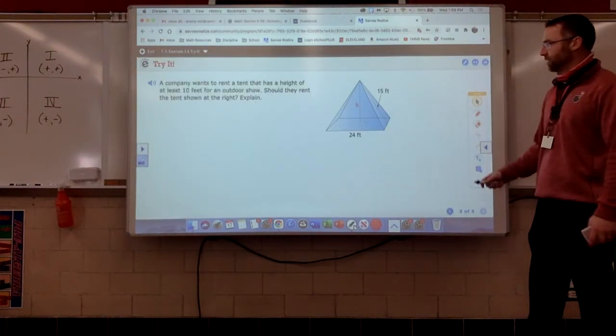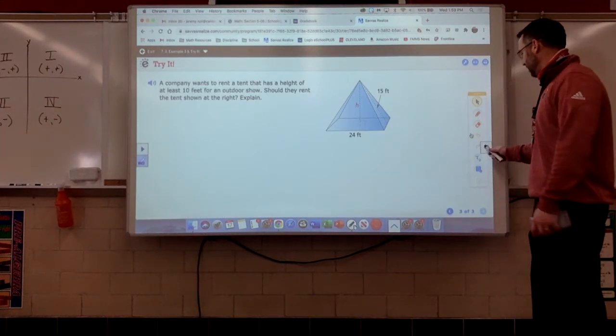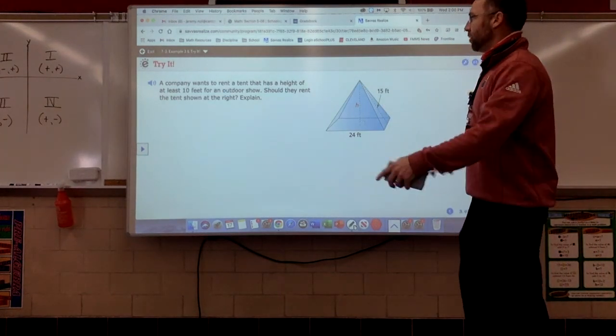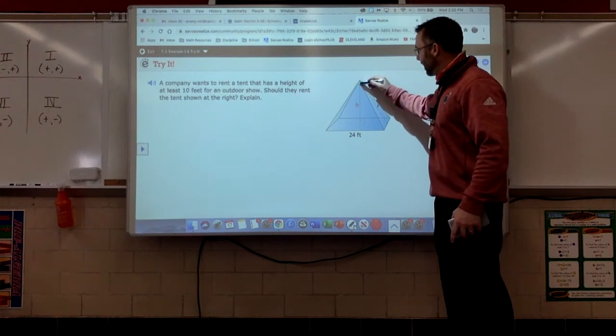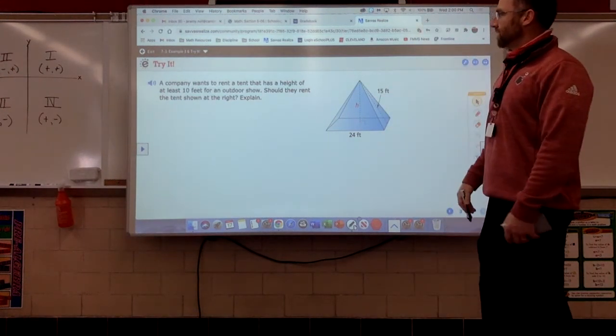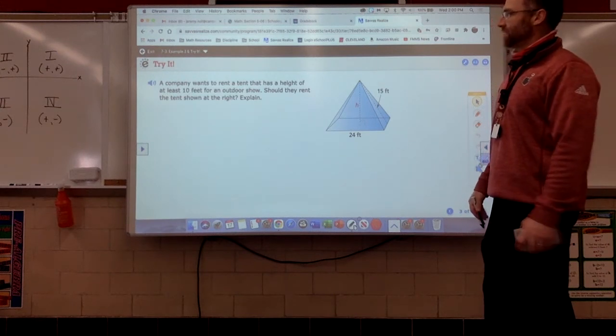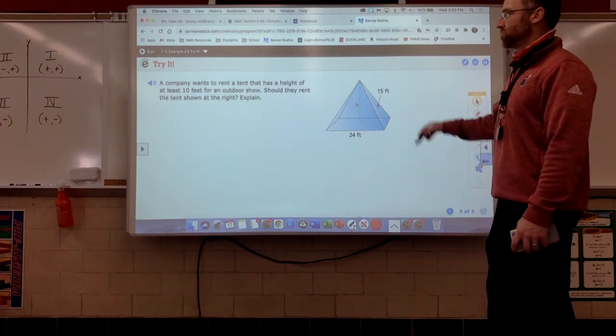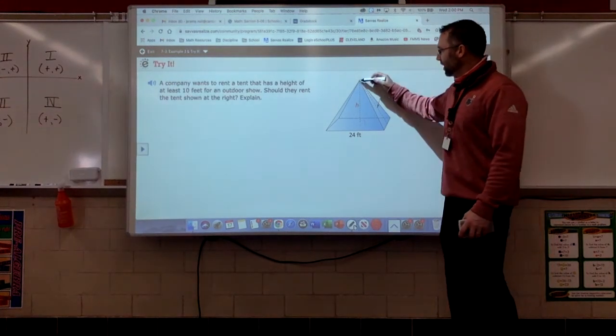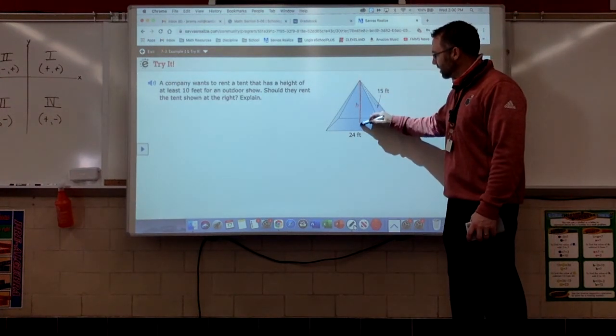Let's go to the try-it. We're throwing in out of the blue there. That's a pyramid. That's okay. We're going to make it work. We need to find the height of this pyramid. So, a company wants to rent a tent that has a height of at least 10 feet for an outdoor show. Should they rent the tent shown? Explain. Well, we need to find this height.